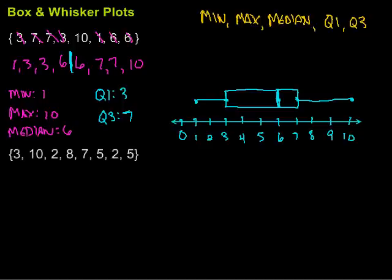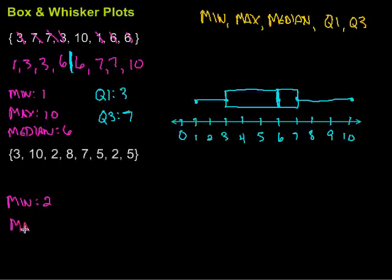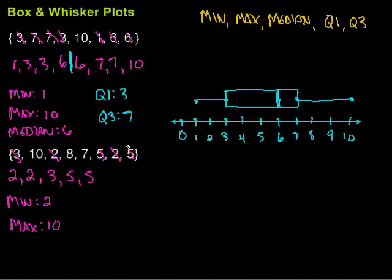Let's look at the next example. Again, we want to find five points to put together our box and whisker plot. The minimum is the smallest one — it looks like two. The maximum is the largest — that's also ten. Then I need to find the median, so I have to put them in order: two, two, three, five, five, seven, eight, and ten.